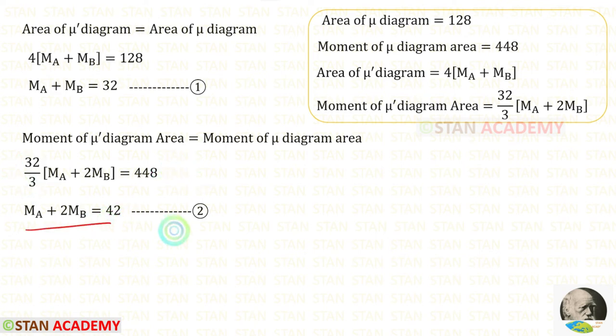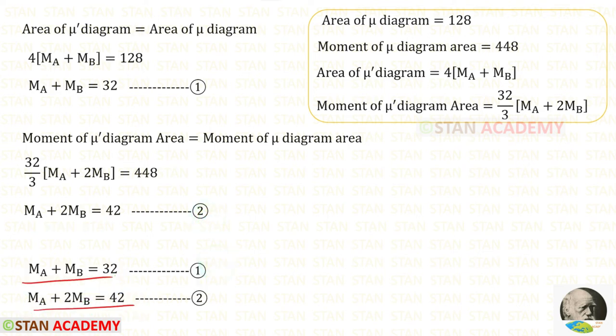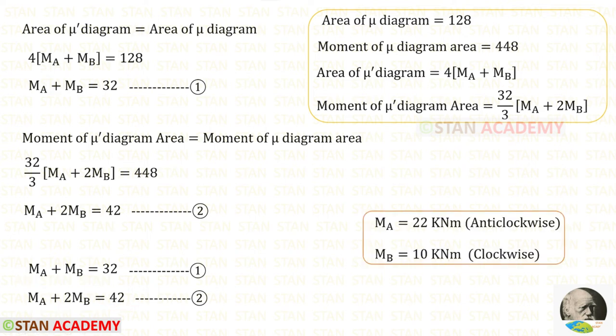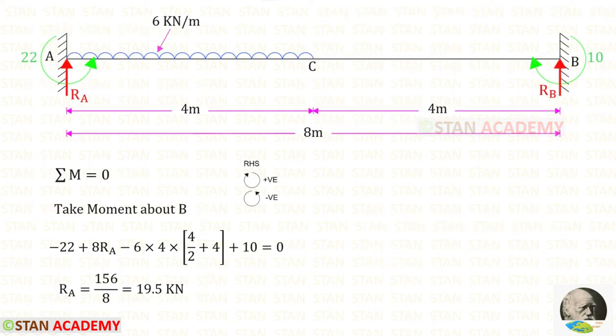Let us keep the second equation as Equation 2. Now we have two equations. Using a calculator to solve these two equations — if you do not know how to solve two equations in the calculator, see the description below — for MA I have got 22 kilo newton meter and for MB I have got 10 kilo newton meter.